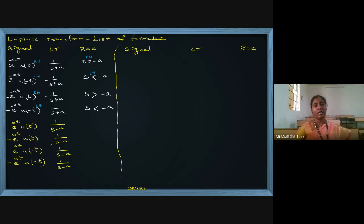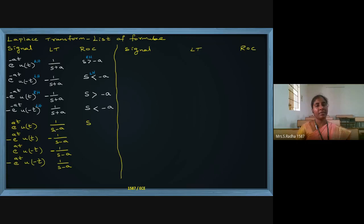In the second case, one negative sign is there, so the Laplace is minus 1 by (s minus a). Here again one negative sign, so minus 1 by (s minus a). In the fourth case, two negative signs are there — minus minus — so it comes as positive 1 by (s minus a).